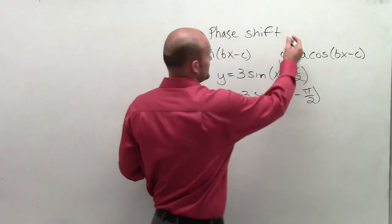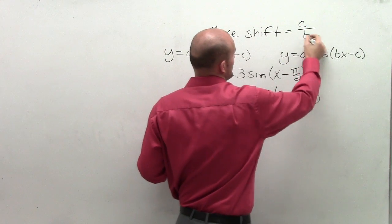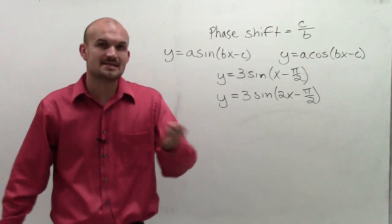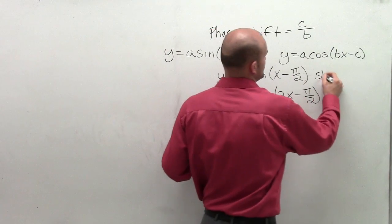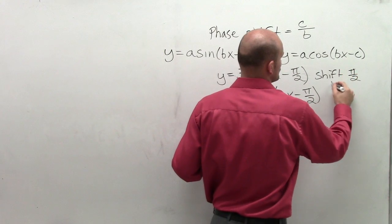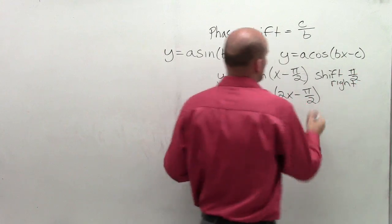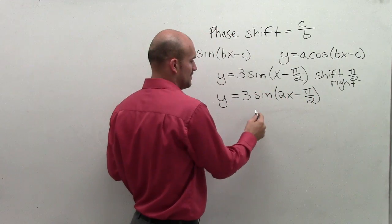So our phase shift is actually equal to c divided by b. So let's take a look at our phase shift. Because in this example, you could say you're going to shift pi over 2 to the right. However, in this problem, we need to make sure we take c and divide it by b.